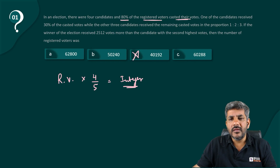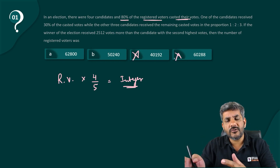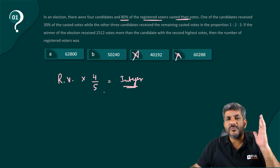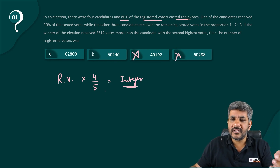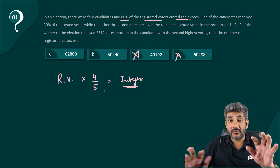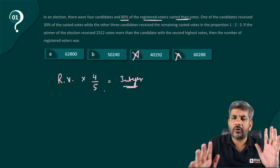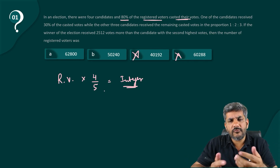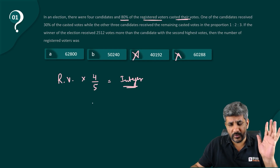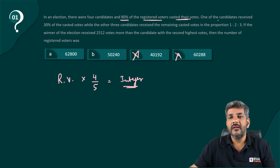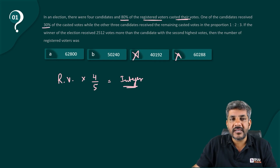By that logic, option C and option D are eliminated — 40192 and 60288 are both not multiples of 5. So the answer is either option A or option B. The question could have been extremely easy if the other option was also a non-multiple of 5, but we still have two options left, so we move ahead.